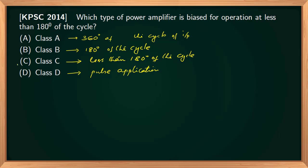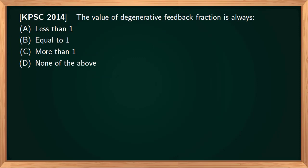The value of degenerative feedback fraction is always: Option A, less than 1; Option B, equal to 1; Option C, more than 1; Option D, none of the above. If we consider a feedback amplifier which uses negative feedback, it will contain a forward amplifier with gain A. This takes an input xi and produces an output x0.